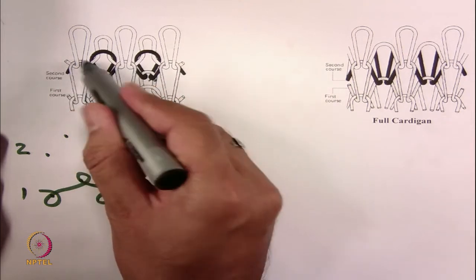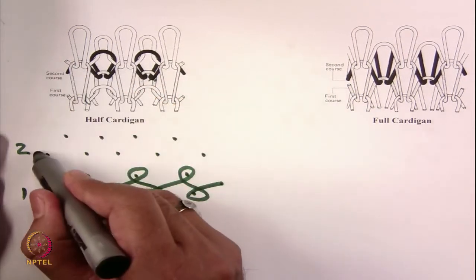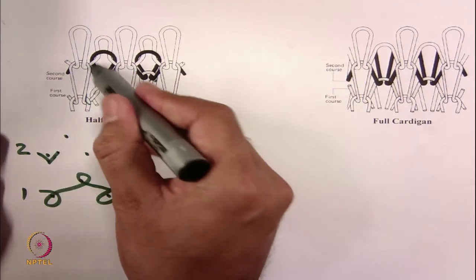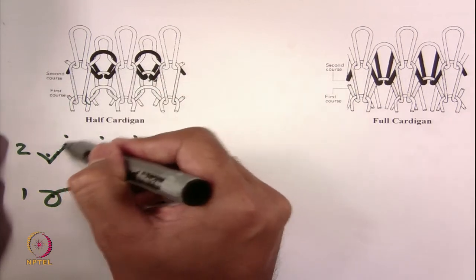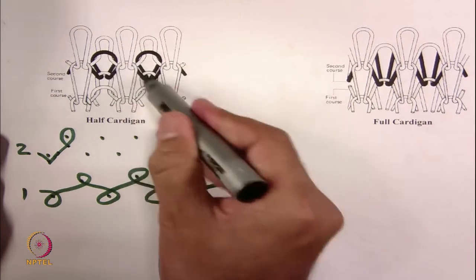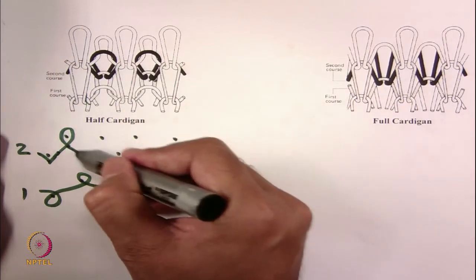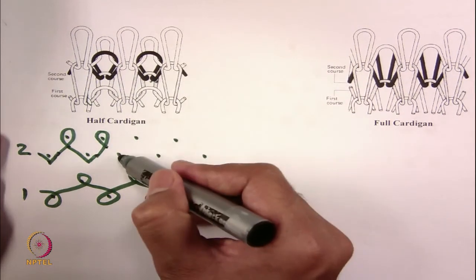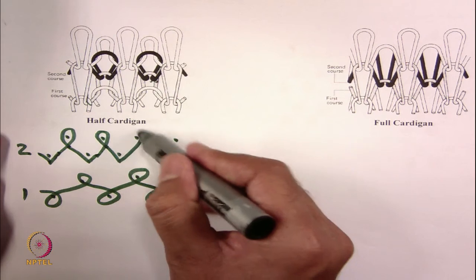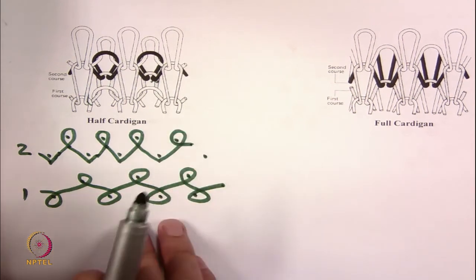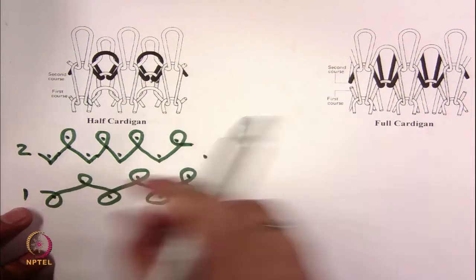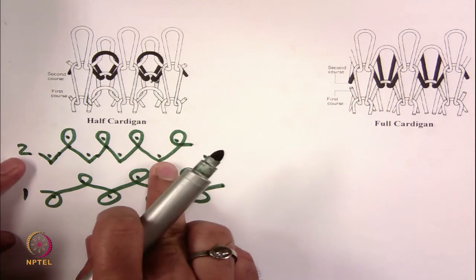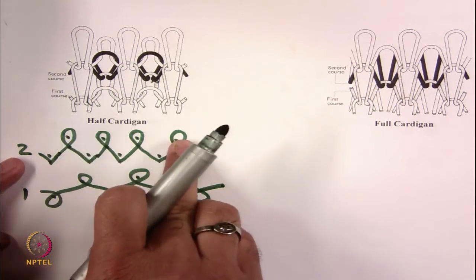Following the path of the black yarn — this is tuck, you can see it is at the head. This is tuck. Then if you see the loop, this is a loop — technical back loop. Then the third column is again tuck, the fourth column is again loop, then tuck, loop, tuck, loop. So in the first course both beds are knitting; in the second course, the front bed is making tuck and the back bed is making loops.